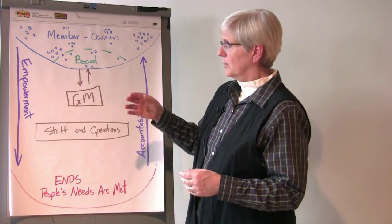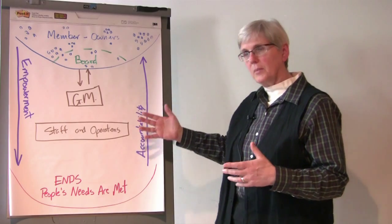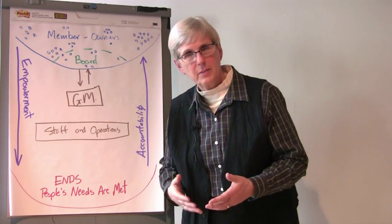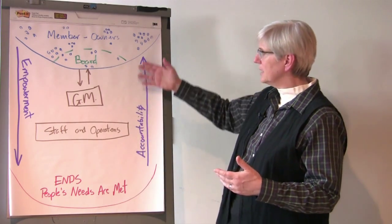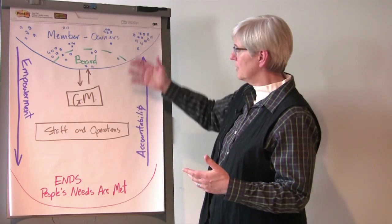Now, we also want to have a counterbalance to that power so that there's some accountability for how that power is used. And so accountability flows in the opposite direction. Accountability flows upward.